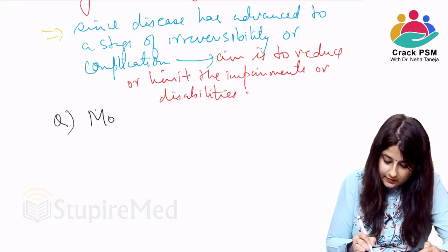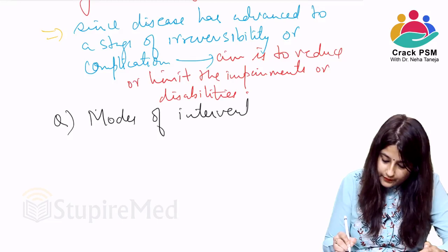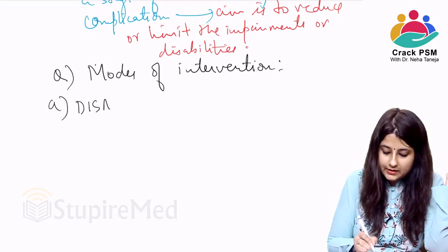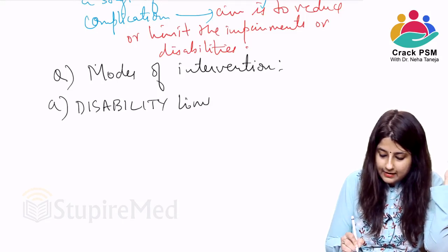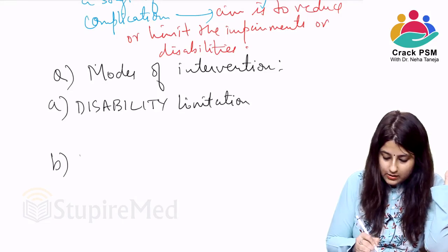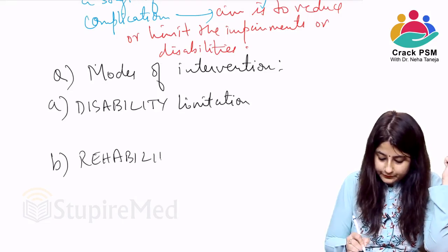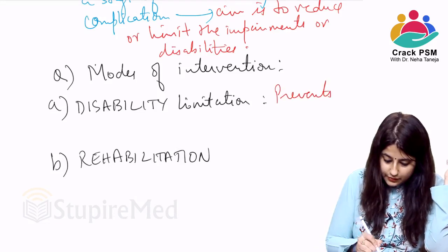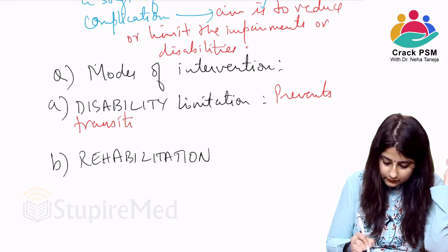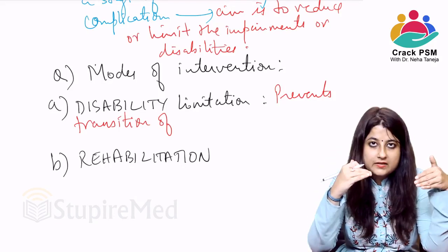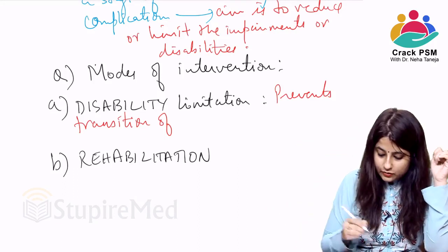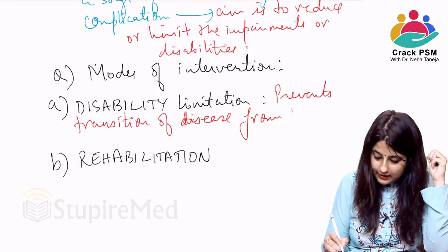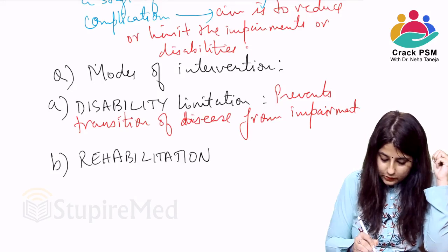What are the modes of intervention to achieve tertiary level of prevention? Number one is disability limitation, and number two is rehabilitation. Disability limitation prevents the transition of disease from impairment to handicap.